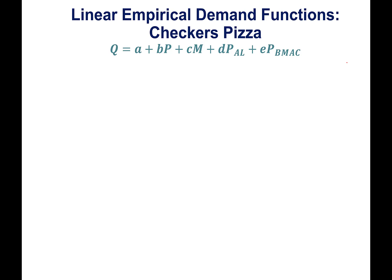This is a linear empirical demand function of Checkers Pizza from the book. Q is the quantity of pizza sold. P is the price of the pizza. M is the income of people in the area. P_AL is the price of a substitute, Al's Pizza. And the last one is the price of Big Mac. Big Mac is a substitute too, but a weaker substitute. Al's Pizza is a direct substitute, and Big Mac is fast food but not a direct substitute.